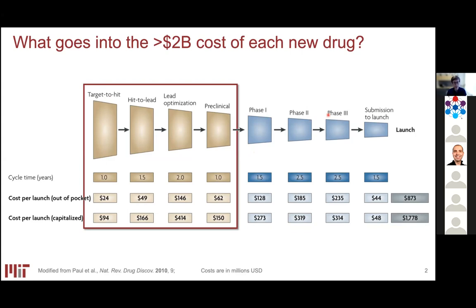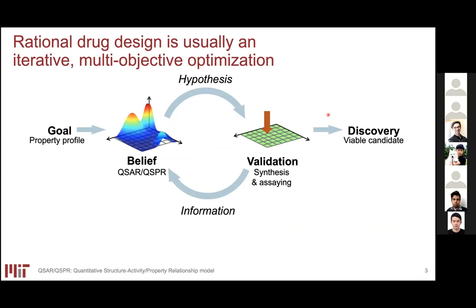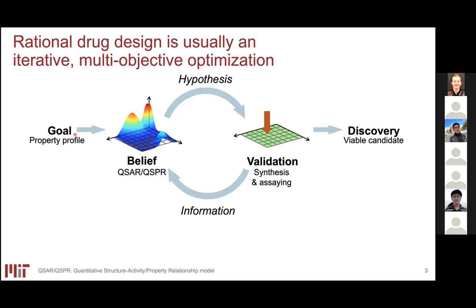We're in this early stage of molecular design where we go through iterative design cycles. We're given some goal for the properties we'd like a molecular structure to exhibit. We form models about what structures exhibit which properties, use those models to hypothesize new molecular candidates, and validate those predictions in the lab. We synthesize new molecules, assay them, collect information, revise our beliefs, and keep iterating until we find a molecule that checks all the boxes.